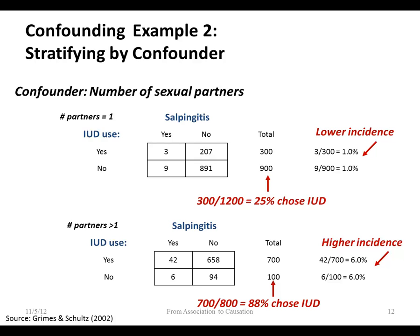A couple of other things to notice after stratification. First, the prevalence of IUD use differs between strata: in the one-partner group about 25% use an IUD, whereas in the more-than-one-partner group about 88% use an IUD — confirming IUD use and number of partners are associated. Also, underlying incidence of salpingitis differs: 1% in the one-partner group versus 6% in the more-than-one-partner group, neither differing by IUD use. This confirms number of partners is also a predictor of salpingitis.